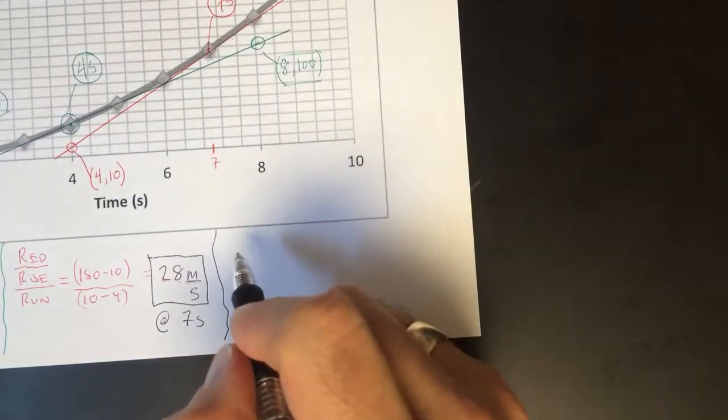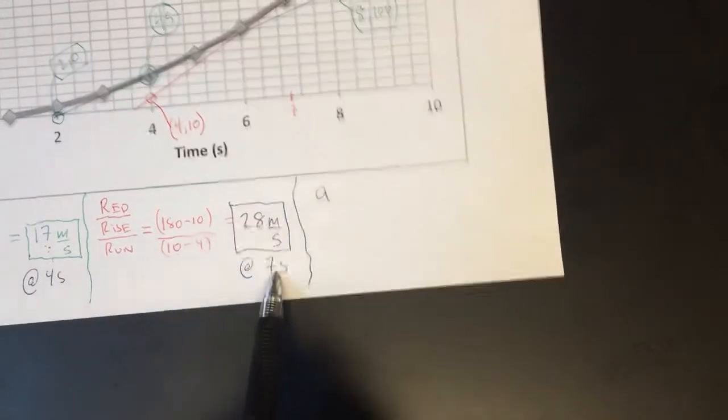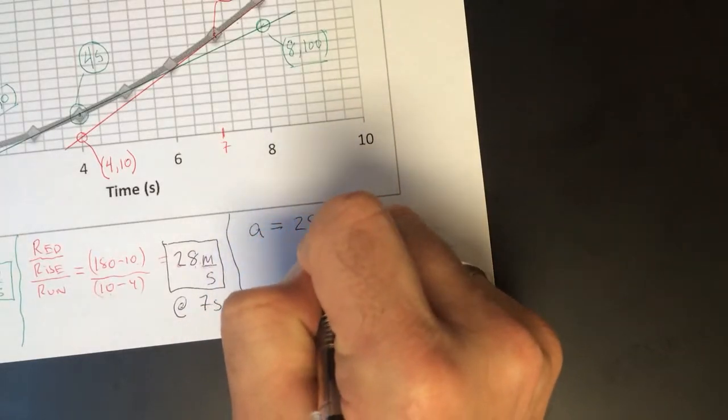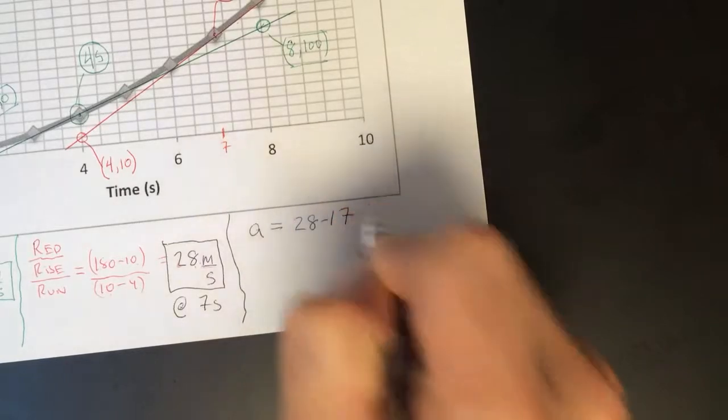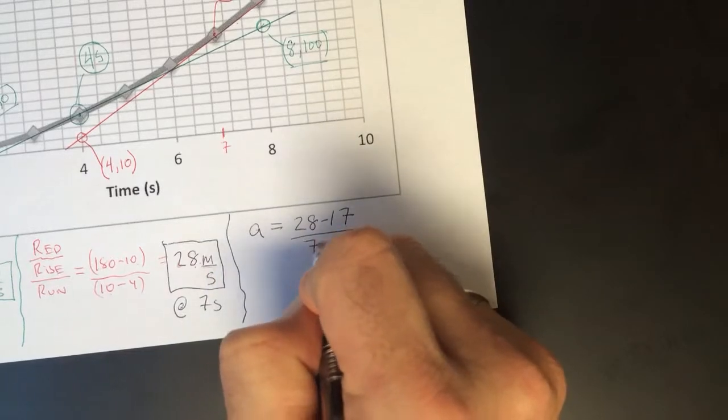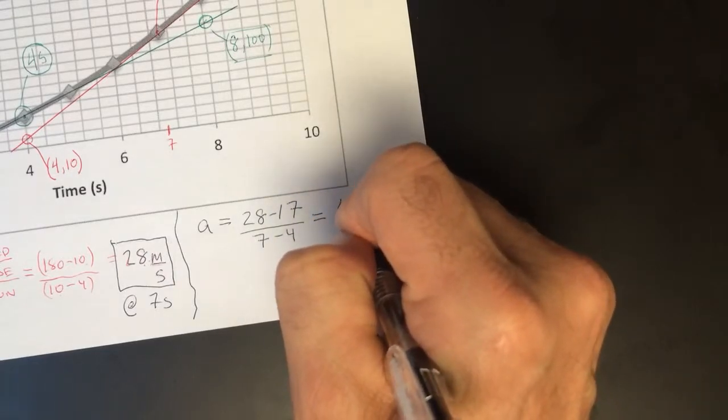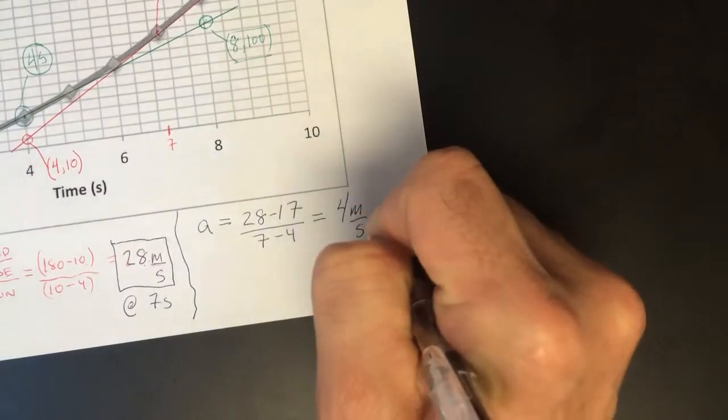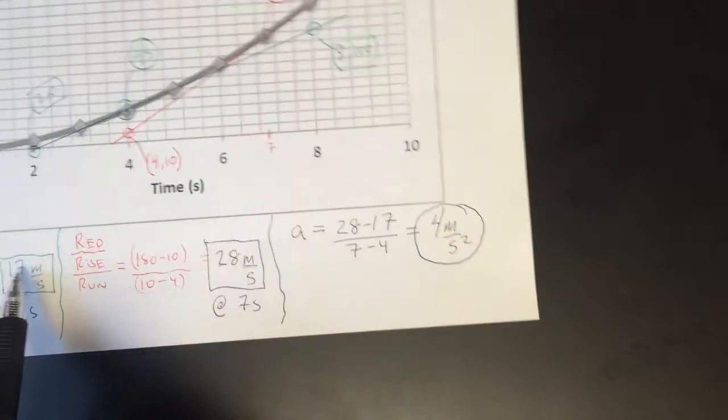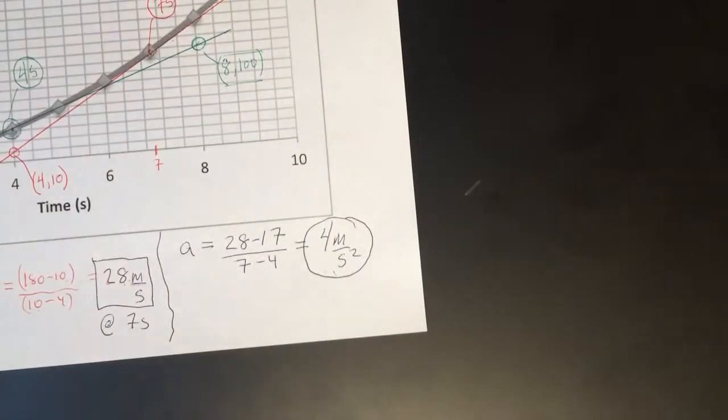So if I want to know what the acceleration is, I know the acceleration is going to be equal to the difference between these two divided by the difference in time. So the acceleration is going to be equal to 28 minus 17 divided by 7 minus 4. And that's going to be equal to approximately 4 meters per second squared. Okay. So that's the acceleration. I'll go from 17 to 28 in 3 seconds and that works out to 4 meters per second squared.